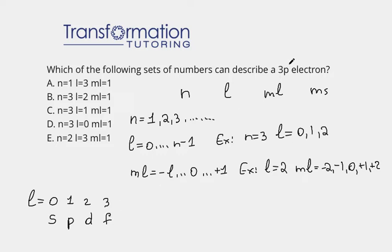So let's go ahead and look at this 3P electron here. The first number here is the N number. So if it says 3P, that means my N number is equal to 3. I can eliminate wherever I see my N number is not equal to 3, because that is wrong.